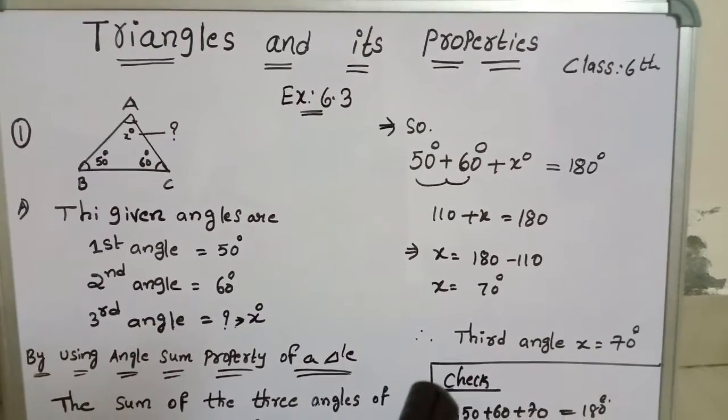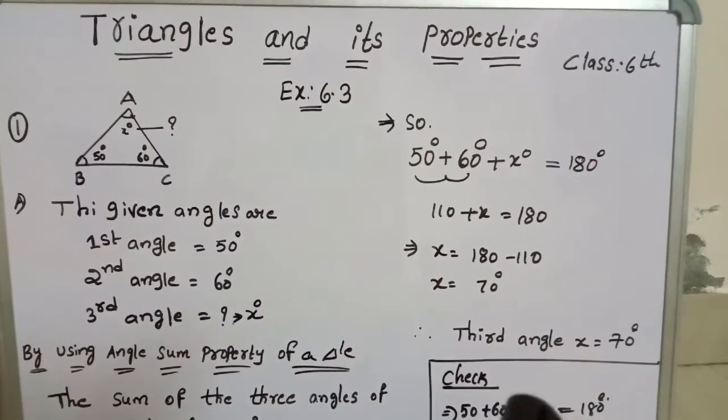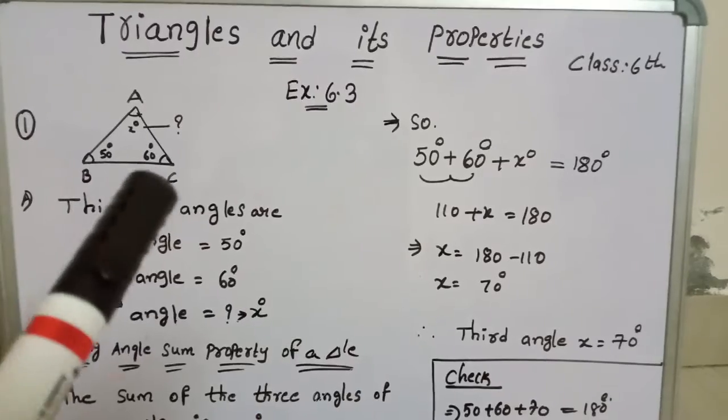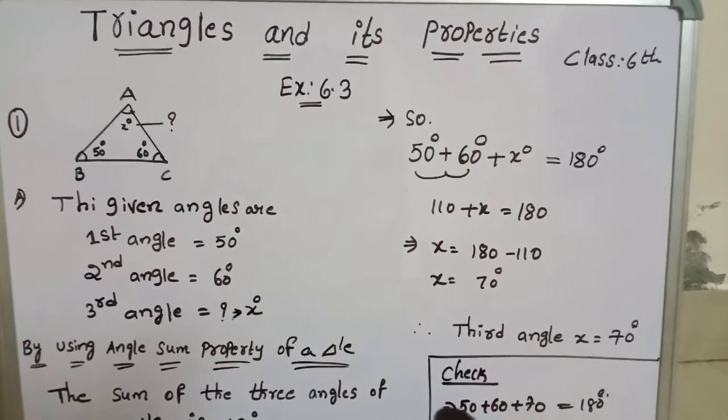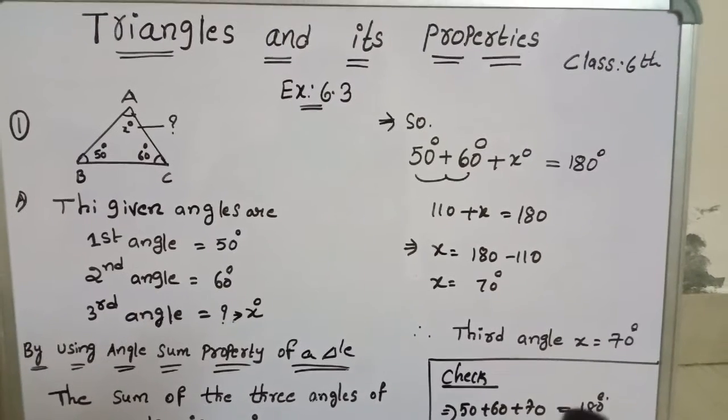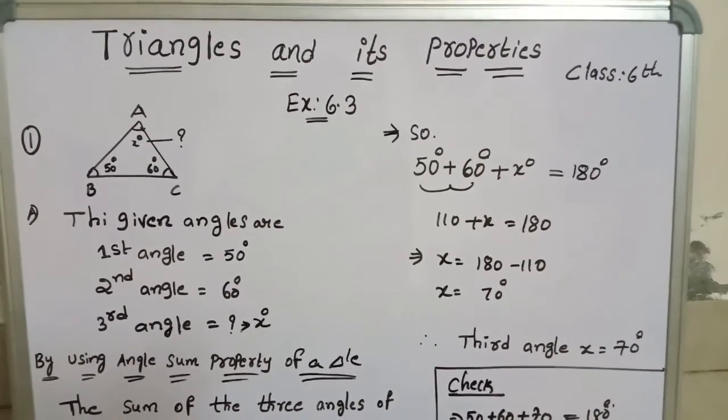Now you can check if our answer is correct or not. For that just add these 3 angles: 50 degrees plus 60 degrees plus 70. If you add these 3 angles the result is 180 degrees. Thank you friends.